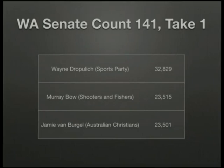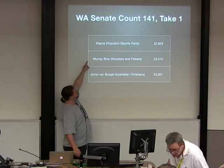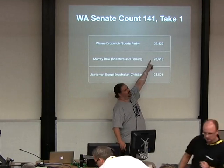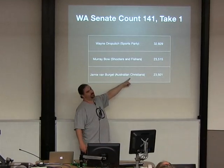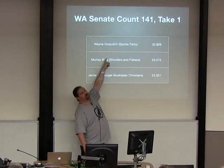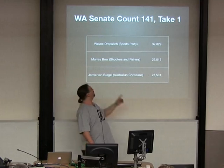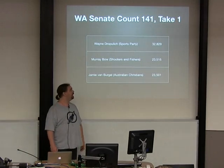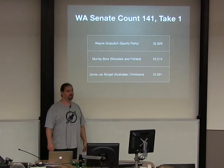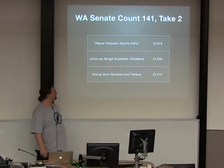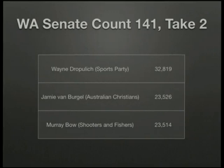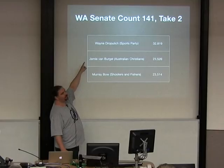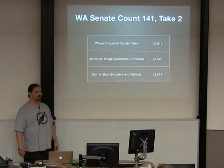The problem with this is that you can end up with interesting things like this. This is the West Australian count — the 141st count in the Senate count, first version. These are the 14 votes I was talking about. In this scenario, the Australian Christians get excluded, their preferences go to the Shooters and Fishers, who then have more votes than Wayne Droppulich of the Sports Party. Their preferences then go on to elect Dio Wang of the Palmer United Party and Louise Pratt of the ALP. That 14-vote thing caused a lot of concern, so they did it again. This time the two positions switched — the Shooters and Fishers preferences go to Wayne Droppulich, who gets elected, and his preferences go on to elect Ludlam of the Greens.